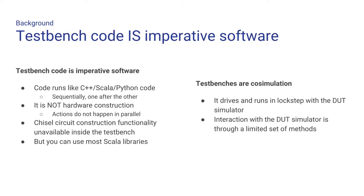Test bench code is imperative software. You are not writing Chisel — you are writing Chisel test benches. You are not writing hardware. You are writing software. If you get that confused, you're going to have a very bad day. It's sequential code: one line of code executes after the other. It doesn't generate hardware. This is software running on your computer.